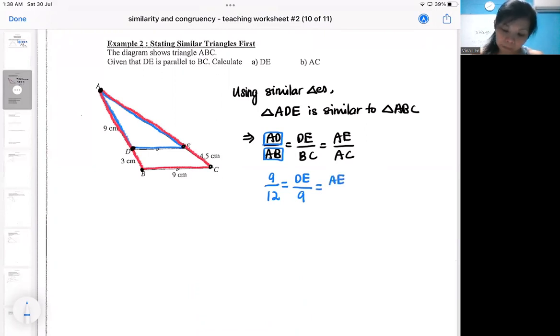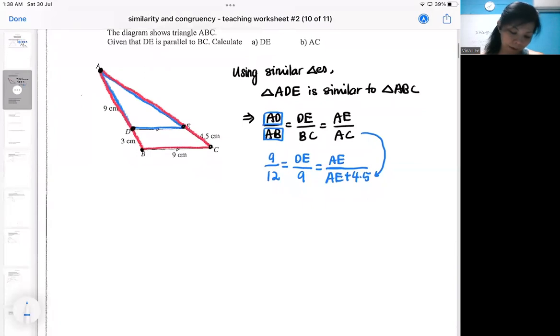I also don't have my AC. My AC is actually dependent on AE. So from here, we realize we can find DE.